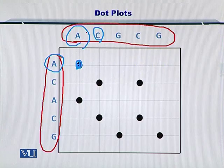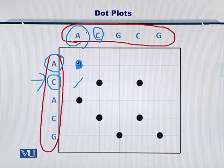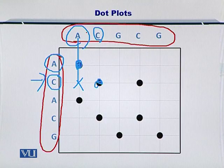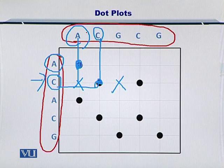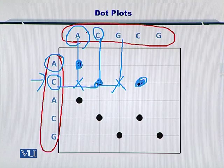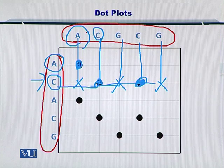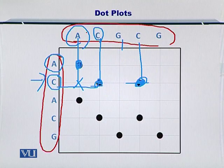Next, you go to the second row and start comparing C. A does not match with C. C matches with the C here. G does not match with C. C again matches with the C. And G does not match with the C. Essentially, you have only got two dots as mentioned here.